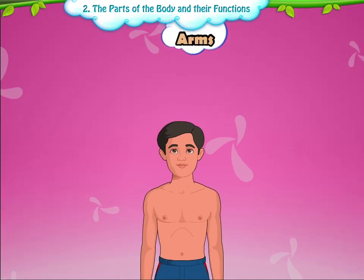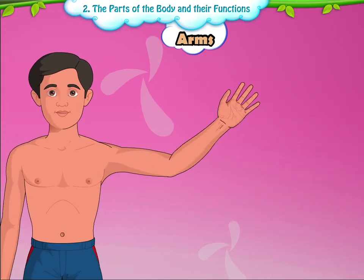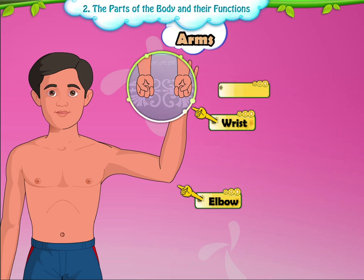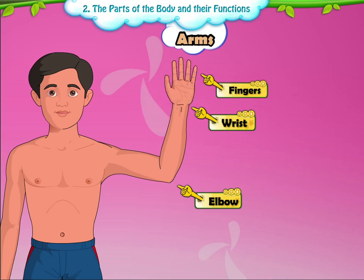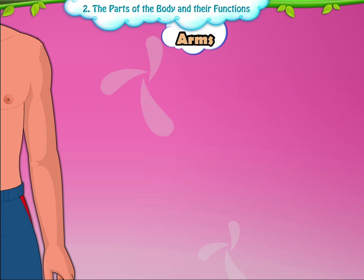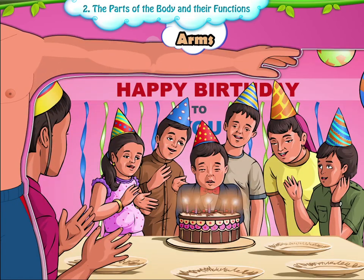Arms. The arms bend at the elbows and the wrists. We can bend our fingers too. That is why we are able to work with our hands. We can pick up things, write and draw with our hands. We can also clap with our hands.